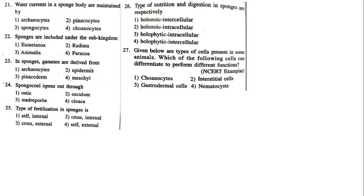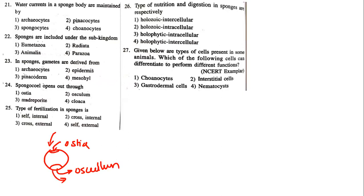Next question: a sponge body opens out through which structure? In a sponge organism, two types of pores are present: ostia and osculum. Ostia receives water while osculum releases water. These are connected by the canal system where the water canal system is present. Water is released through osculum, so that is the answer. Ostia is where inward water flow occurs, and osculum is where outward water flow takes place.